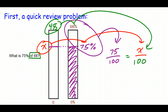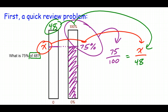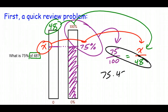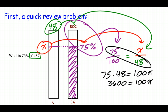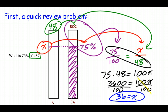So we have 75 over 100 equals X over 48. When we solve this using cross products: 75 times 48 equals 100 times X. 75 times 48 is 3,600, equal to 100 times X. Dividing both sides by 100, the 100s cancel out and we are left with 36 equals X. So our missing number is 36 — 36 is 75% of 48.